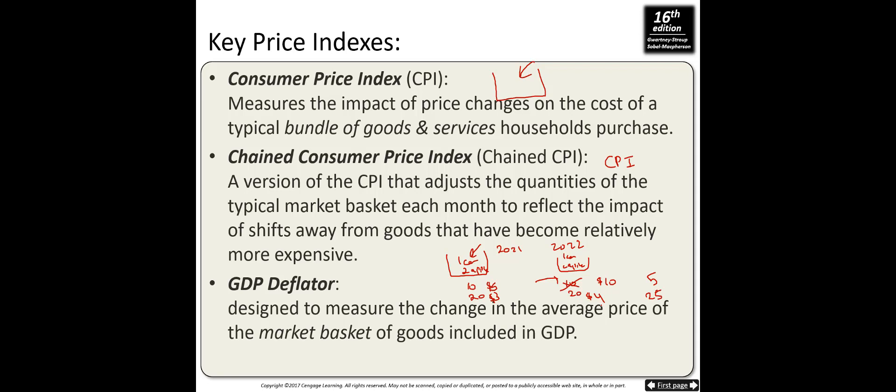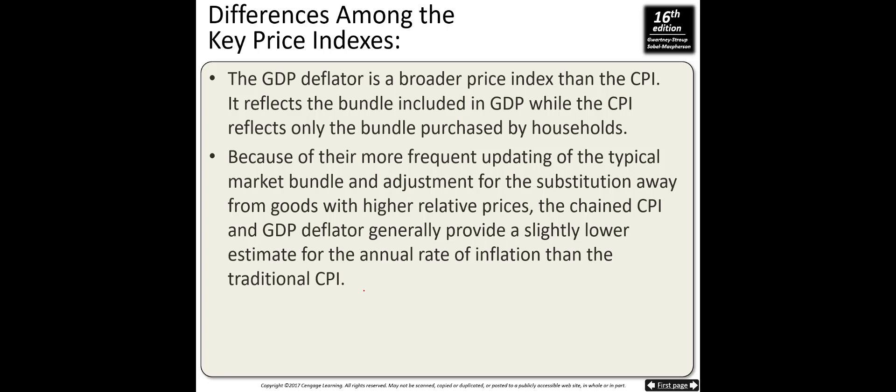Because of this substitution effect, CPI doesn't reflect the real cost of living, but chain CPI corrects for this by adjusting the quantities in the typical market basket each month to reflect shifts away from goods that have become relatively more expensive. The third price index is the GDP deflator, which uses a basket of all goods produced in the country during that year. The GDP deflator is a broader price index than CPI — it reflects the bundle included in GDP, while CPI reflects only the bundle purchased by households.